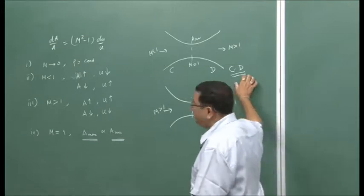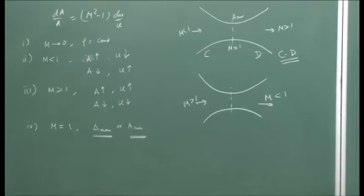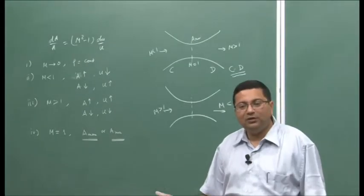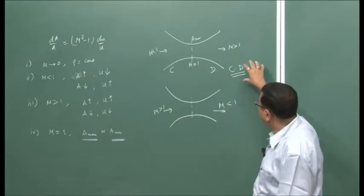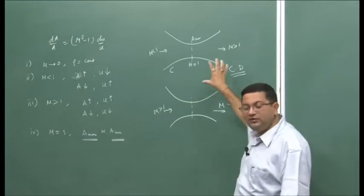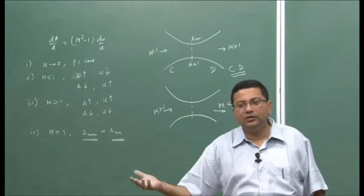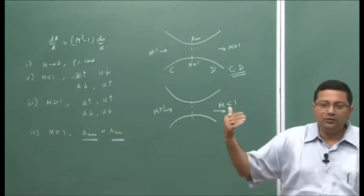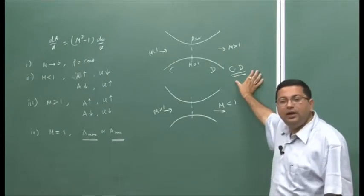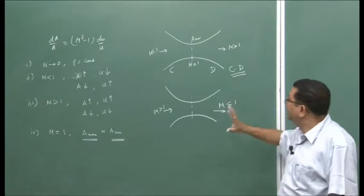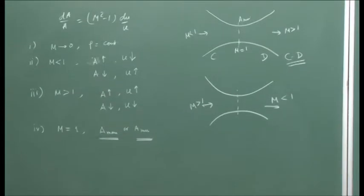This concept was first proposed by a person called de Laval. Therefore, these nozzles are called de Laval nozzles. This is absolutely essential particularly for rocket propulsion, because we want to increase the exit velocity as much as possible — to supersonic speed like exhaust — and in order to get that, we need to have a converging-diverging nozzle. This is a recap of what we have discussed till the last class.